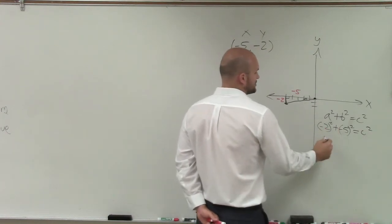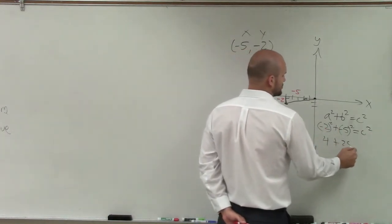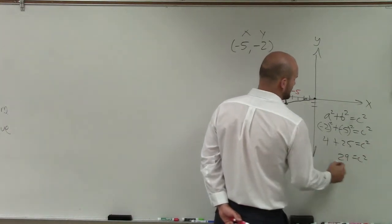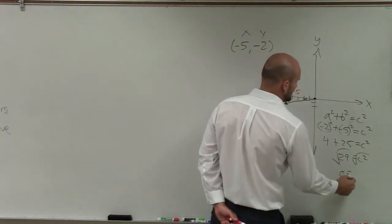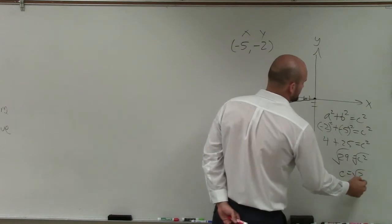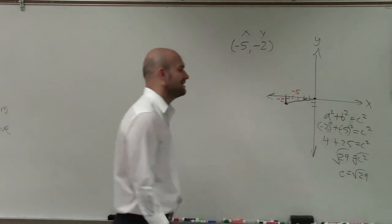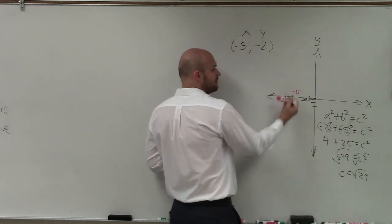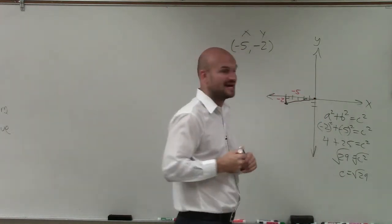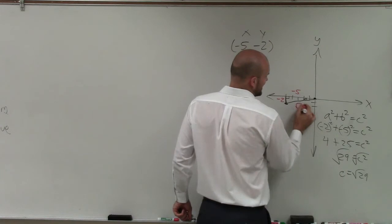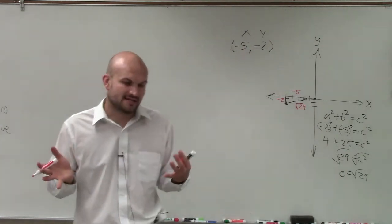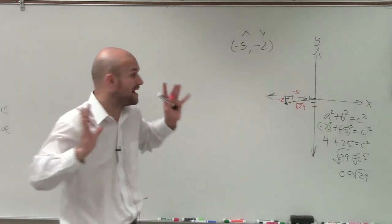That's squared. So therefore, that's 4 plus 25 equals c squared. So I have 29 equals c squared. Square root, square root. c equals the square root of 29. It's not going to be plus or negative, because when we're talking about the hypotenuse, yes, the x and the y coordinates, those can be positive and those can be negative. But our hypotenuse is not going to have a direction attached to it. It's just going to be dealing with a certain magnitude. And that's it. It's just a distance.